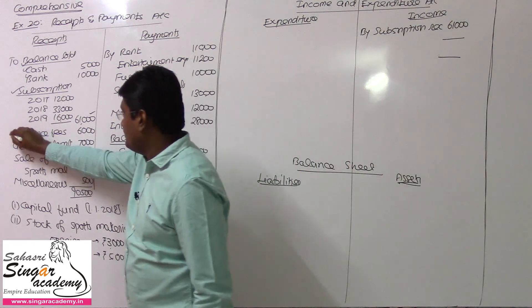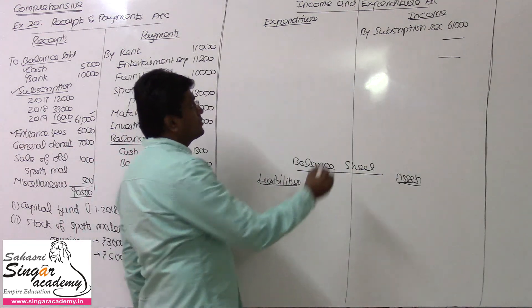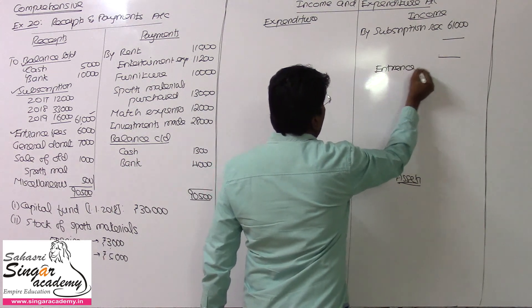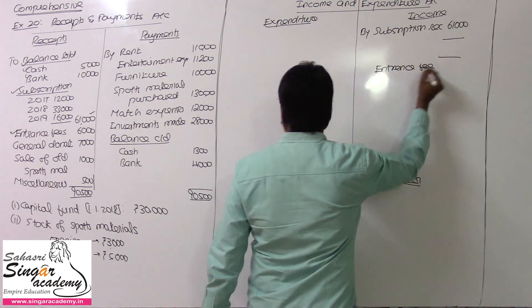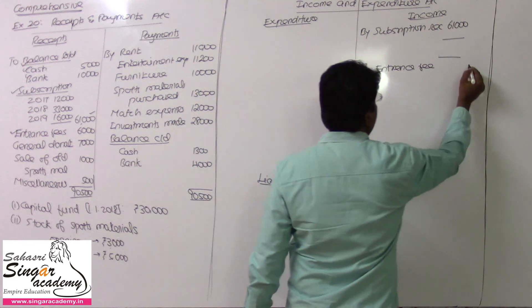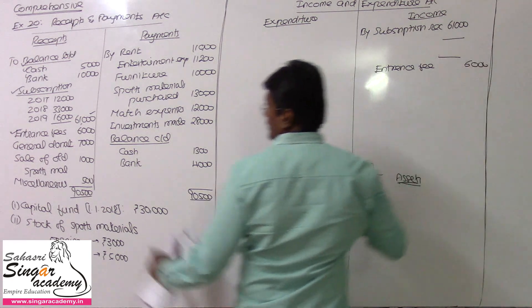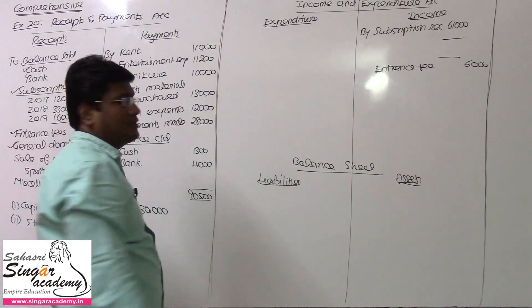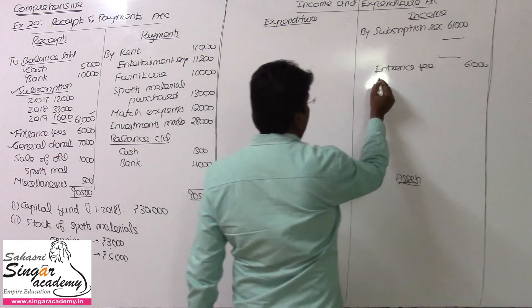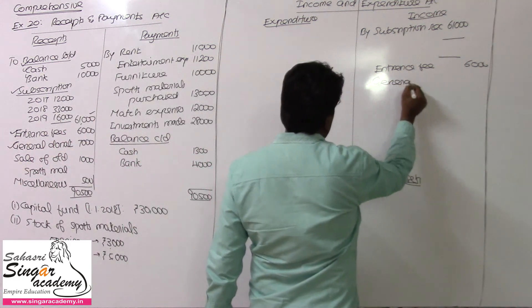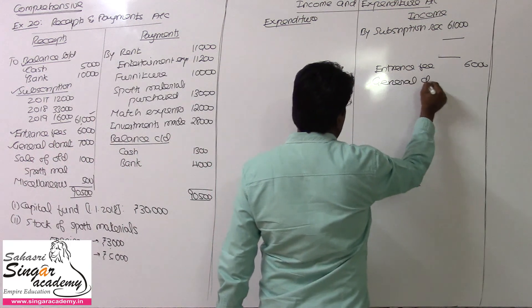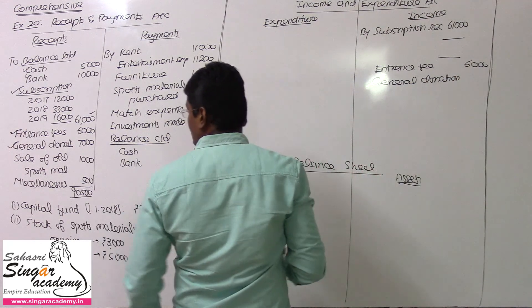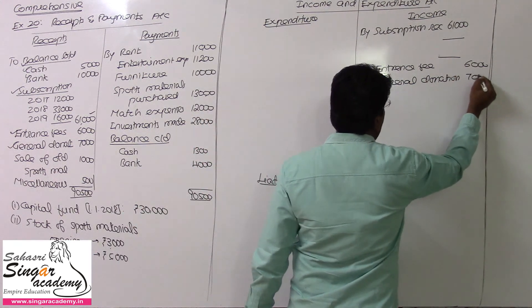Entrance fee — this is revenue income, so entrance fee will be posted here. Entrance fee, value being 6,000. And general donation — general donation will come here on the income side. If it is a specific donation, we could capitalise it. General donation: 7,000, we will post it here.